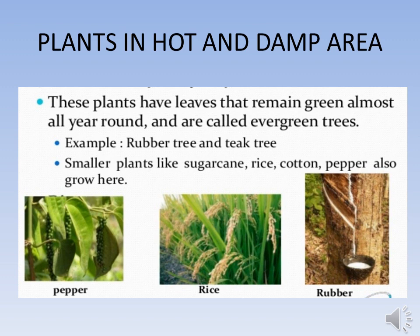The next type of terrestrial plant is plants in the hot and damp area. The plants growing in this area have leaves that remain green almost all year around and they do not shed their leaves in winter — they remain ever green. Plants that grow in such places are teak, coconut, pepper, rubber, tea, coffee, sugarcane, rice, and cotton.